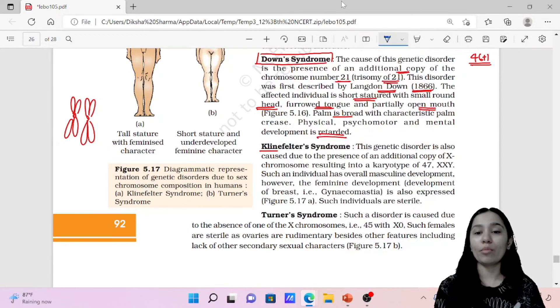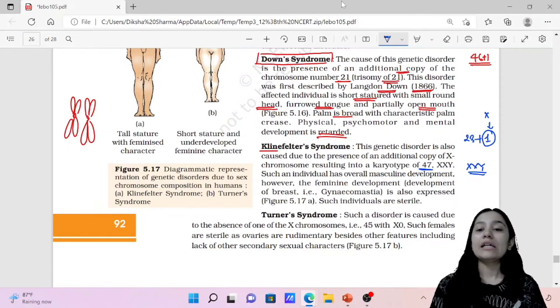Next important disorder is Klinefelter syndrome, really very important. Klinefelter syndrome is again an aneuploidy because 46 becomes plus 1, which is 47. This genetic disorder is also caused due to the presence of additional copy of X chromosome. You have additional copy of X chromosome in your sex chromosome. So then it becomes double X Y. These people who have Klinefelter syndrome, they have feminine development as well because of the presence of 2X chromosome along with masculine developments. So these people have masculine developments and feminine developments all together. And their chromosome number becomes 47 total.